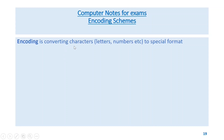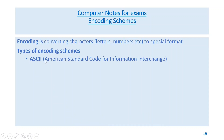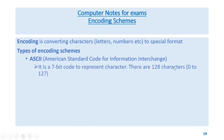Encoding is converting characters, letters, numbers, etc. to a special format. ASCII — American Standard Code for Information Interchange — is a 7-bit code to represent characters; there are 128 characters, numbered 0 to 127.